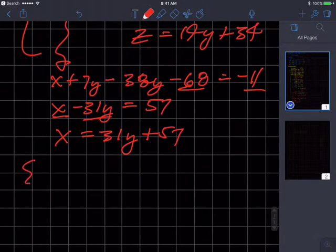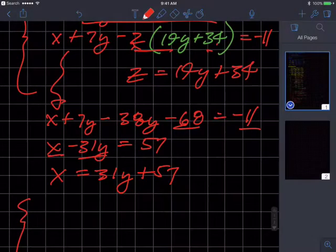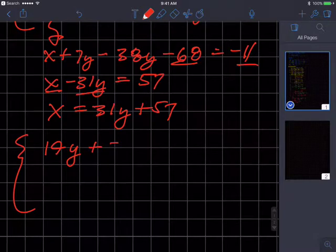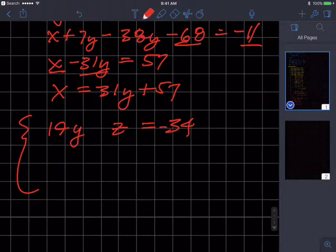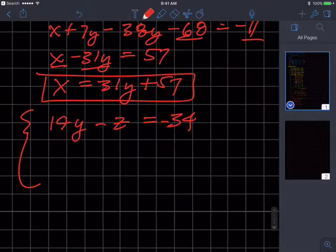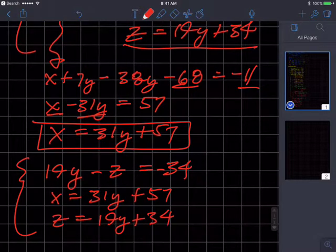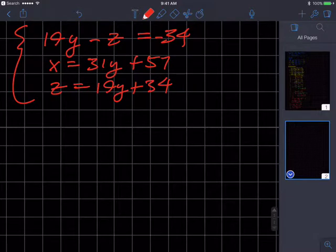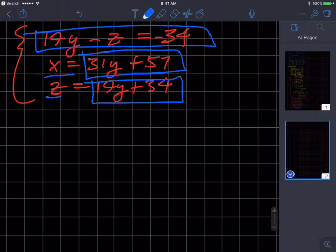So now my three equations look sort of like this. I got this one, which is 19y. Plus z equals something. 34. It's not that though. It's negative z, negative 34. The second equation became this one. So now I have x equals 31y plus 57. And the third equation was this one. z equals 19y plus 34. So what I have is the x term is written in terms of y. The z term is written in terms of y. And this third equation I don't care about. No, I do, but I don't when I'm writing up the solution.